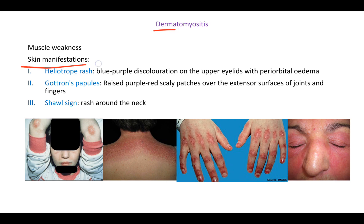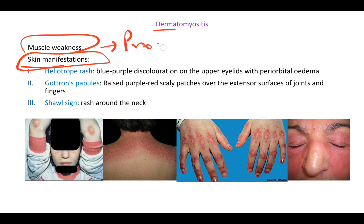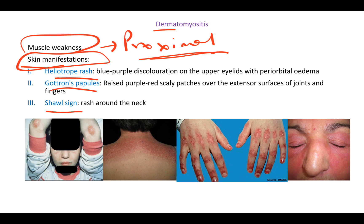Now, dermatomyositis has the same proximal muscle weakness as polymyositis, but additionally has characteristic skin manifestations: heliotrope rash, Gottron's papules, and shawl sign.